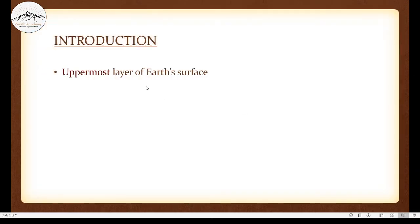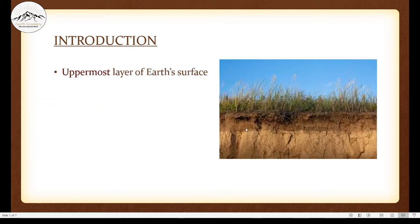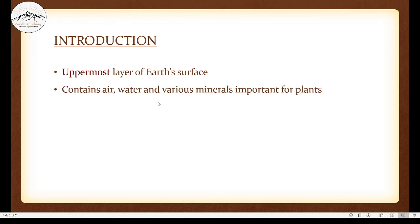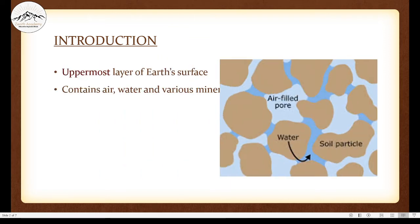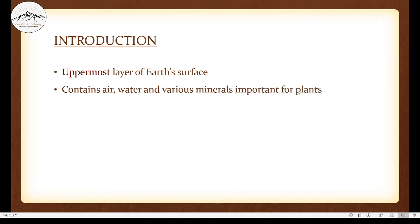The uppermost layer of earth's surface is soil — the layer that we usually see. It contains air, water, and various minerals important for plants. Soil is essentially porous. What does porous mean? It means it has tiny pores in it which give enough space for air and water to seep into it, and this in turn helps in the growth of plants.